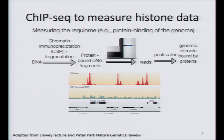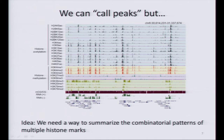We saw already in the previous tutorial how we can get tracks from histone modifications through ChIP-seq, and you can align this data and get some tracks genome-wide. Usually having these tracks we see that there are some enriched regions. What people usually do is call peaks, and this approach is really helpful if you don't have too many tracks. But when you have many different histone modifications, it's really hard to combine all this information. Another point is that the histone modifications are not independent — they are somewhat redundant and can share information.